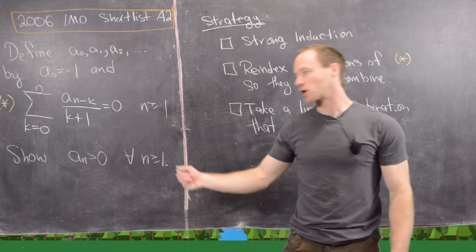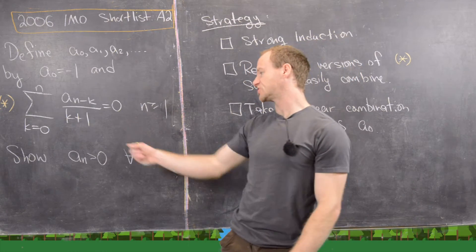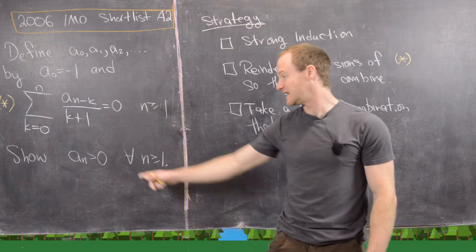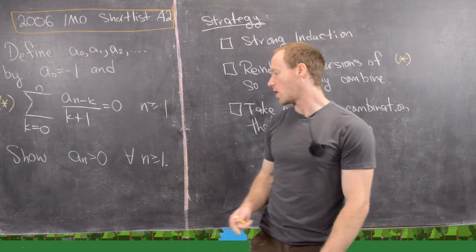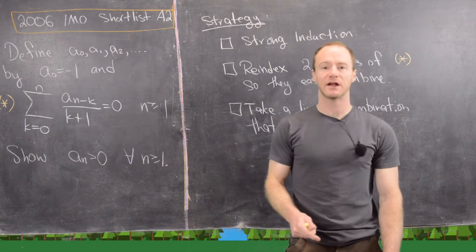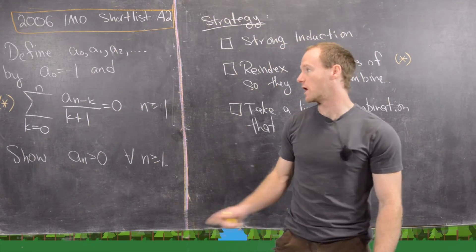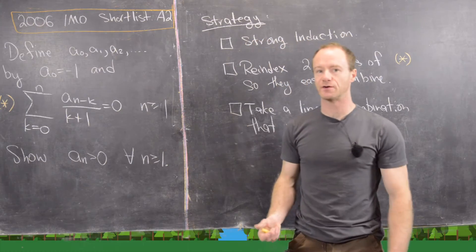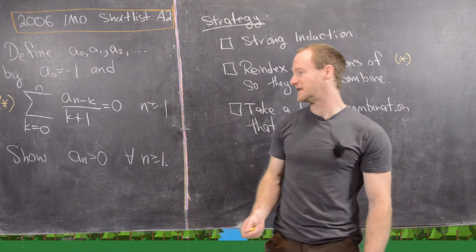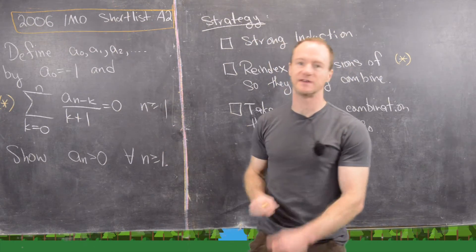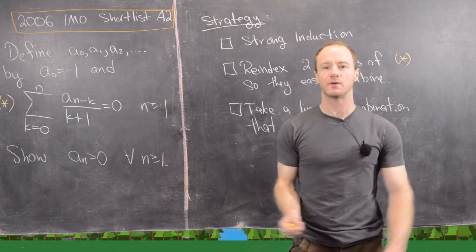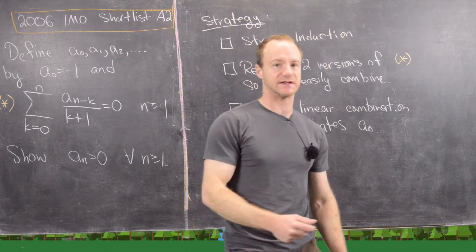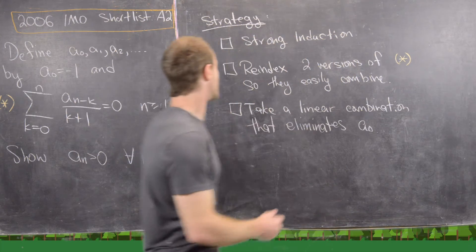Our goal is to show that aₙ is greater than or equal to 0 for all n greater than or equal to 1. Notice our zeroth term is negative 1, so what we want to show is that that's the only negative one — after that they're all positive.